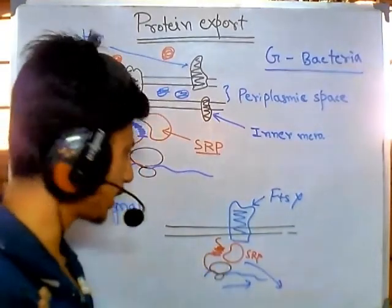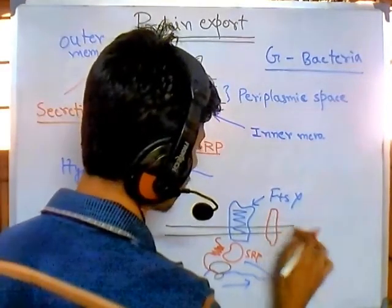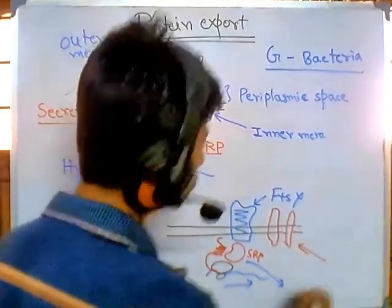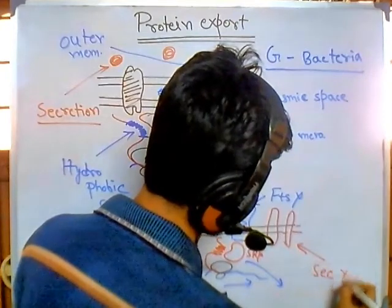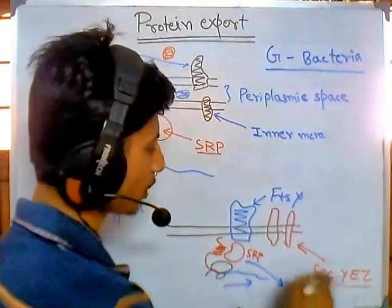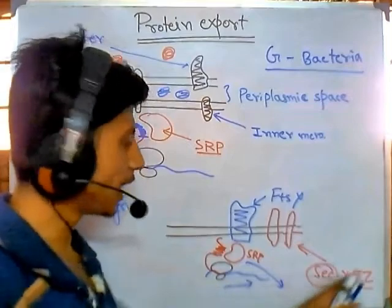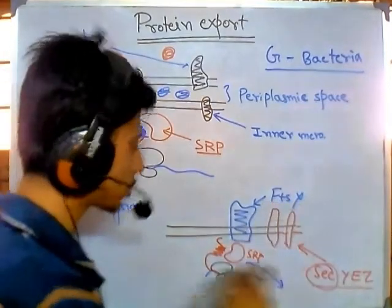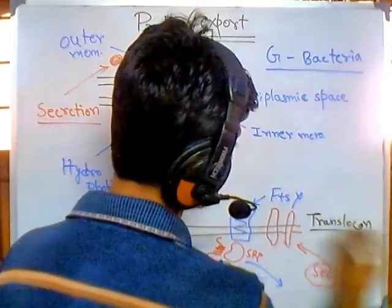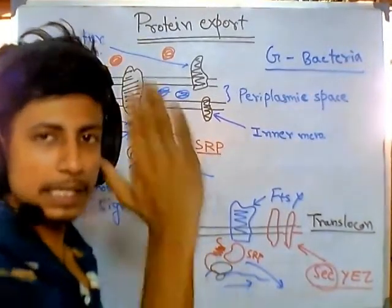Once SRP delivers the growing polypeptide chain to FTSY, it falls off. FTSY then triggers another protein — the translocon channel. This translocon channel protein is referred to as SecY, SecE, and SecZ — different Sec proteins. 'Sec' stands for secretion. Together, these SecYEZ proteins form the translocon channel.